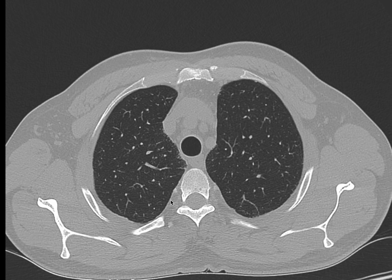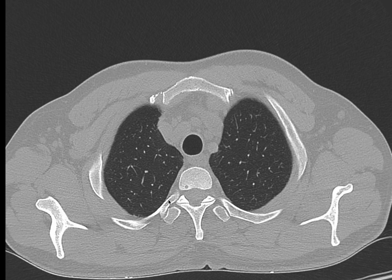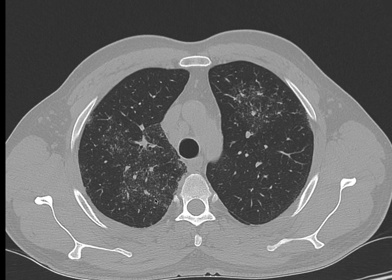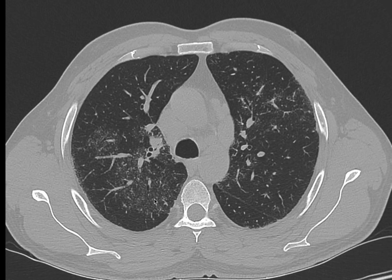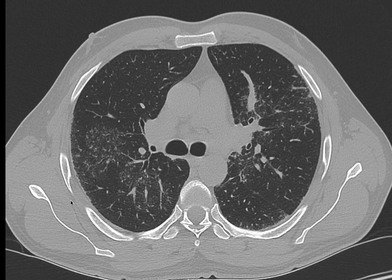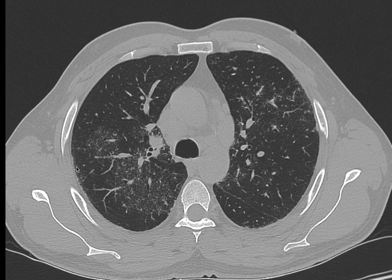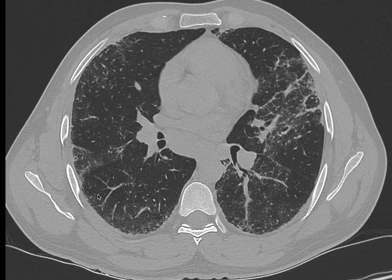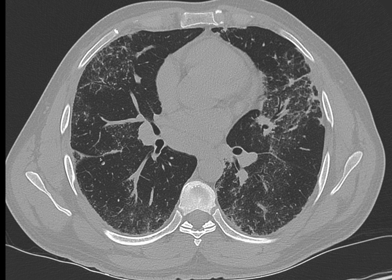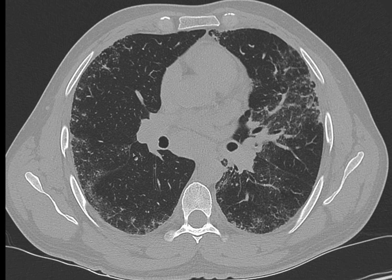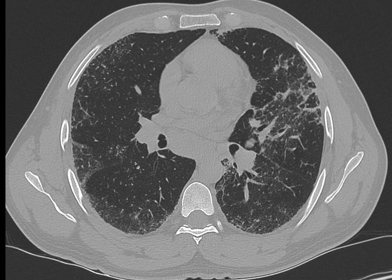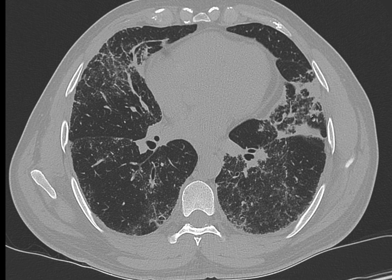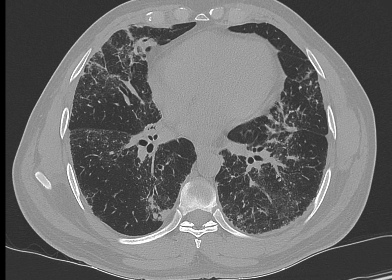The nodular distribution is along the perilymphatic pattern. Nodules are also noted near the pleura and along the septum, giving a typical beaded septum appearance. The perilymphatic distribution of the nodules can be appreciated pretty well here.